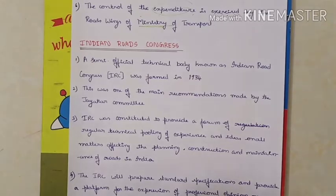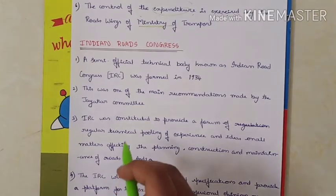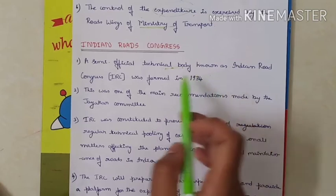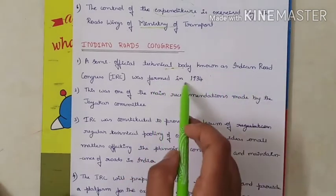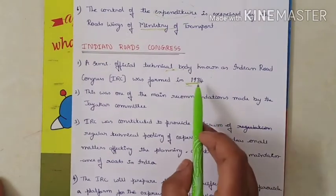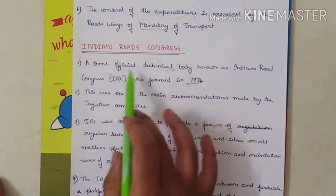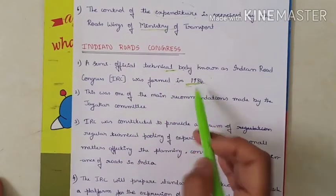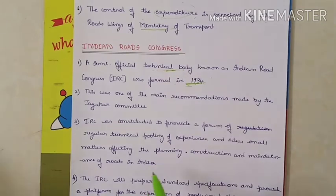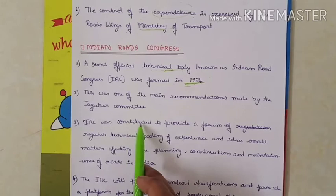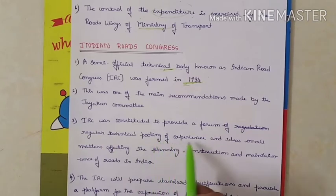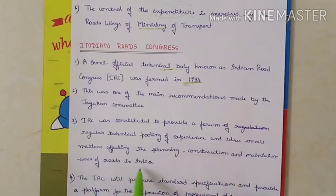The Indian Roads Congress was the semi-official technical body suggested by the JAKA committee and formed in 1934. The IRC was constituted to provide a forum for regular technical pooling of experience and ideas on matters affecting the planning, construction, and maintenance of roads in India.